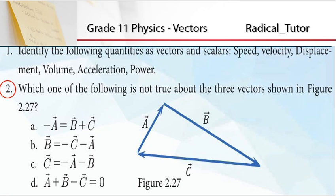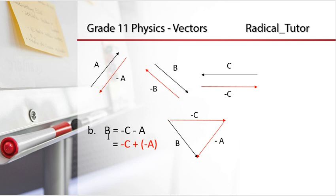Choice B: B = -C - A. This becomes negative of vector C minus negative of vector A. Drawing negative vector C, then adding negative vector A tail to head, we get vector B. So this statement is also correct.